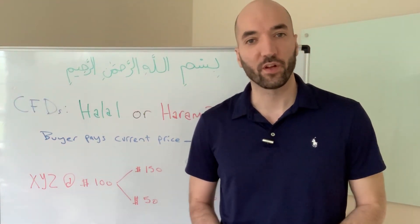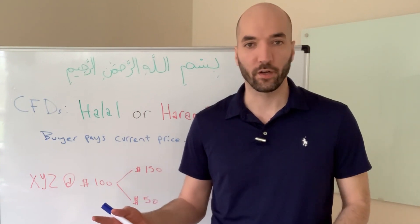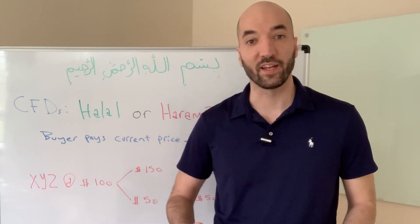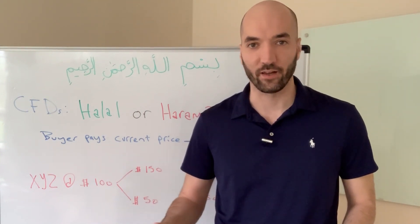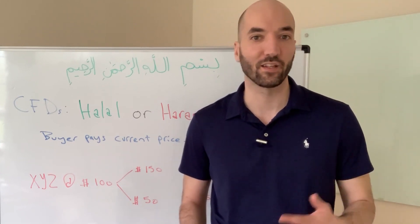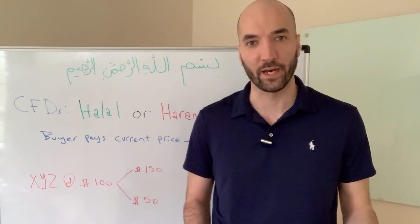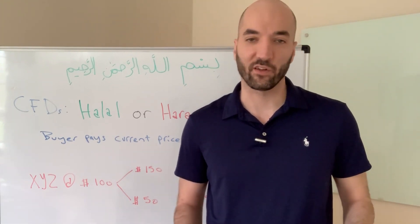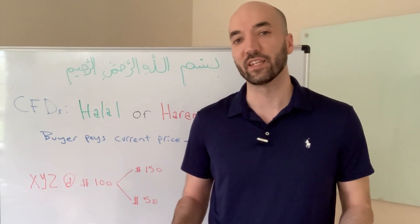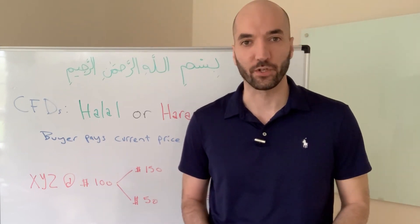CFDs, or contracts for difference, are basically contracts wherein one party bets on the price of an underlying asset going up, and the other party is betting that the price of the underlying asset will go down. If you think the price is going to go down, you sell these contracts; if you think the price is going to go up, you buy them.